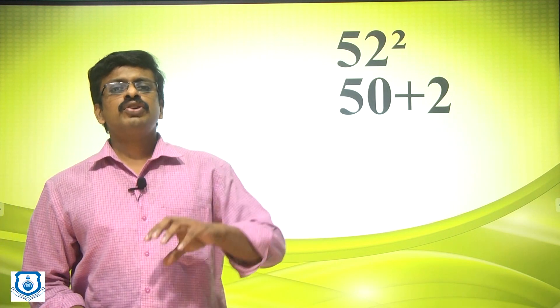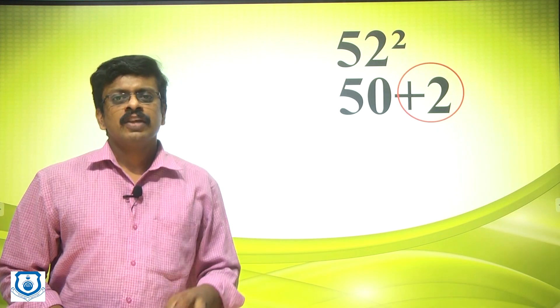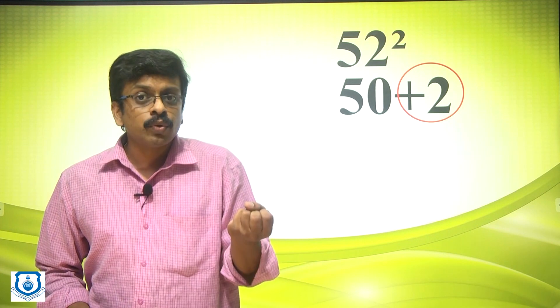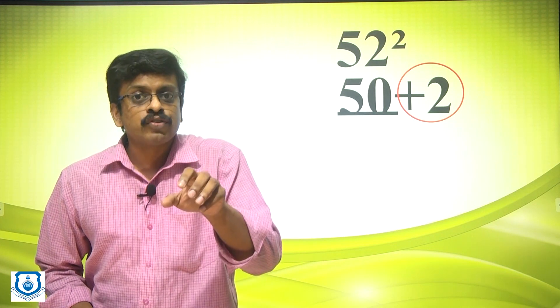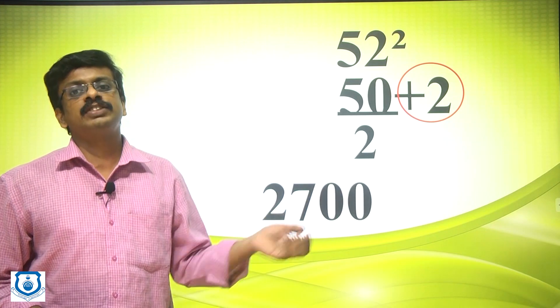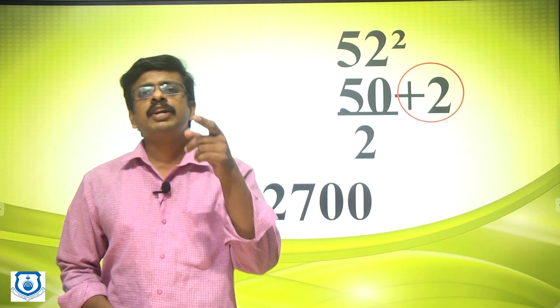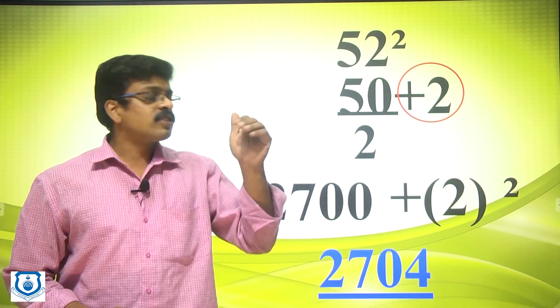Now let us take 52 squared. Here, 52 is 50 plus 2, so we focus on that plus 2. Using the Half 50 Method, take 25 plus 2, which is 27, giving us 2700. Now we add 2 squared, which is 4, to get the final answer: 2704.